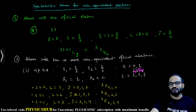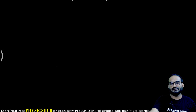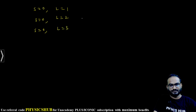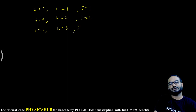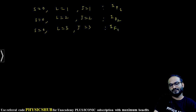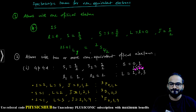In the same manner, combining S=0: with L=1, L=2, and L=3, we get J=1, J=2, and J=3 respectively. The corresponding spectroscopic terms are ¹P₁, ¹D₂, and ¹F₃. In this way you can determine the spectroscopic terms for two non-equivalent electrons.